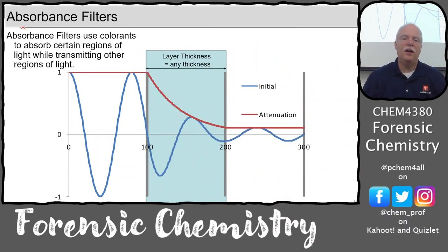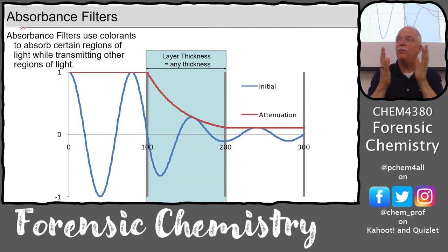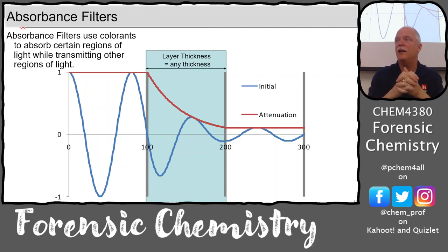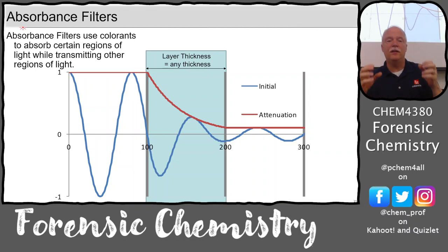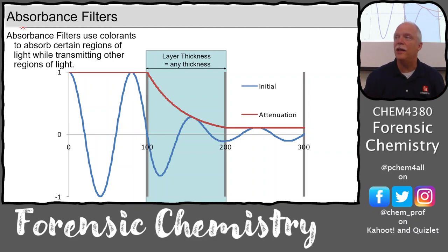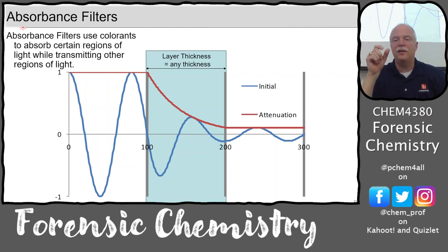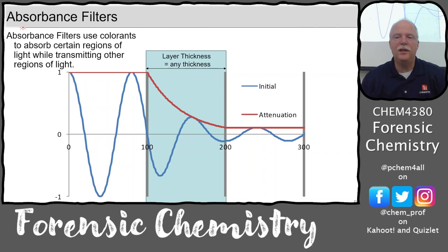In absorption filters, all the attenuated light is absorbed by the glass. With a really bright source, the absorption filter heats up and degrades over time — dye molecules in the glass get bleached out by the light eventually. So there's a shorter lifetime for absorption filters. Interference filters' thin layers can also wear out, but absorption filters definitely absorb more light and heat up more.